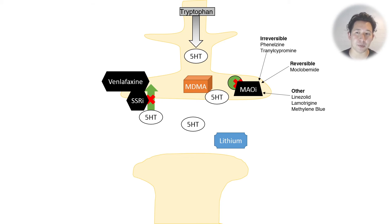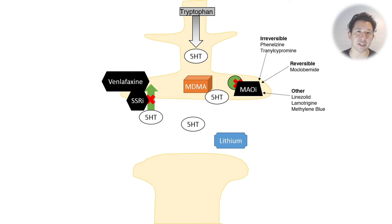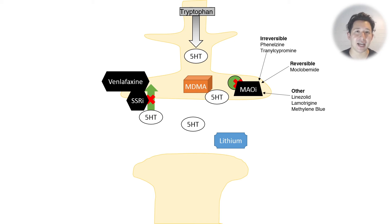We also have the different types of monoamine oxidase inhibitors that inhibit the breakdown of serotonin — the irreversible ones, the reversible ones, both of which are antidepressants — and miscellaneous drugs with inhibitory action on monoamine oxidase, such as the antibiotic linezolid, the anticonvulsant lamotrigine, and methylene blue. Lithium seems to sensitize people to serotonin and increase the risk of serotonin toxicity. Several opiates including tramadol, pethidine, and tapentadol also have actions at the serotonin receptor and can predispose to serotonin toxicity, especially in combination with other drugs.